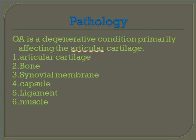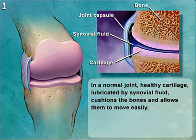Pathology: osteoarthritis is a degenerative condition primarily affecting the articular cartilage. The structures involved include articular cartilage, bone, synovial membrane, capsule, ligaments, and muscles.